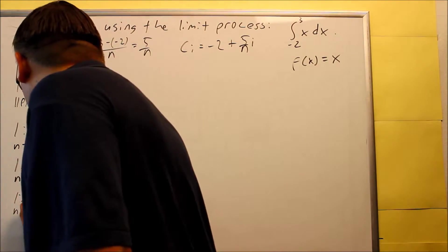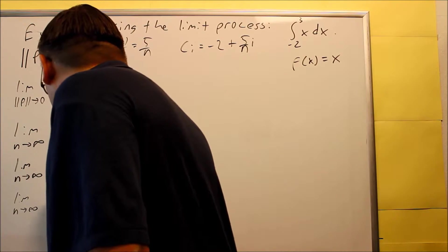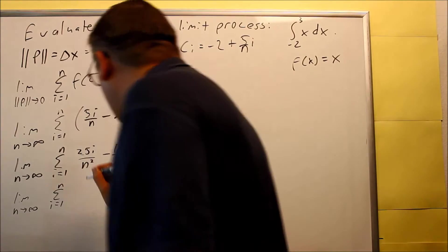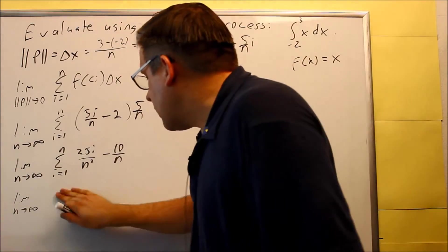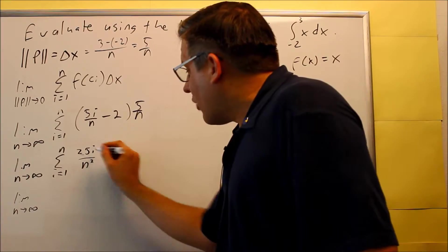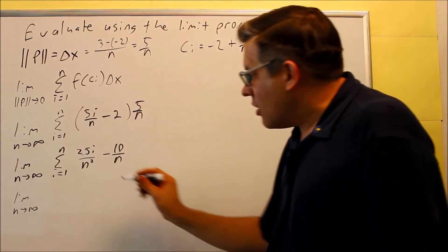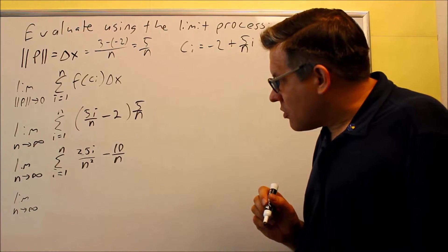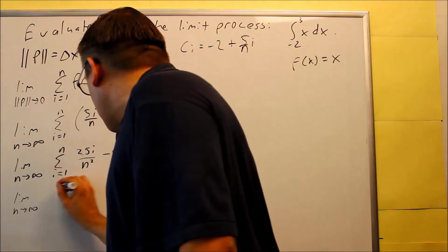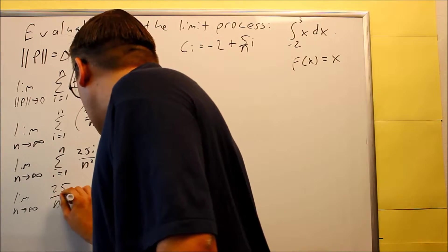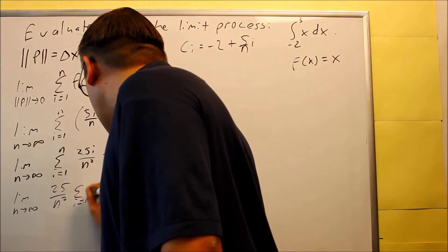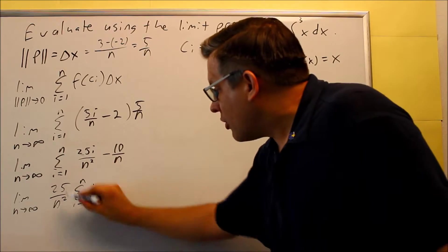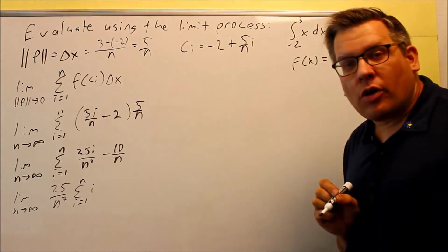So, I'm going to do limit n goes to infinity. I'm going to do the first summation, i equals 1 to n of 25i over n squared. Now, what I'm going to do at the same time here when I split that up is I want to have i left over by itself because this type of notation, we've got to use those special summation formulas. So, what I'll do is I'll just put 25 over n squared on the outside and then just have i equals 1 to n of i left over because then I can put in a specific sum formula in for that one there.